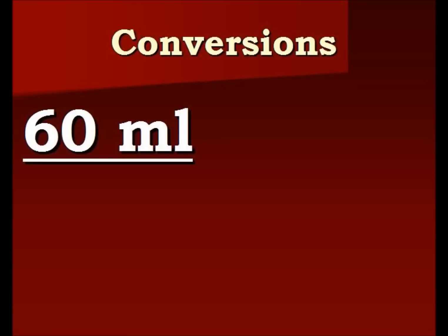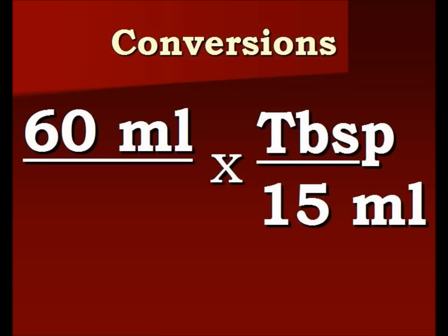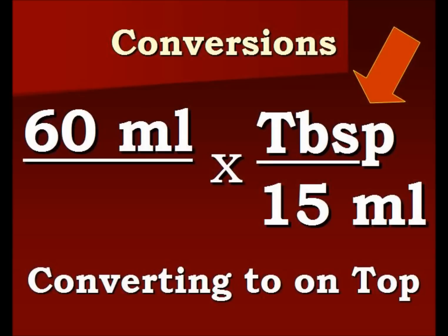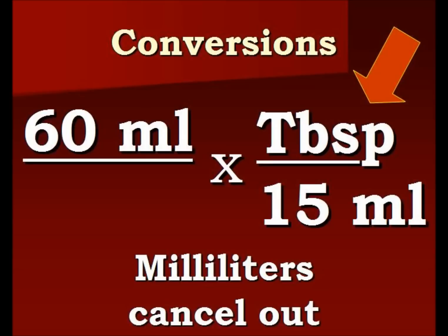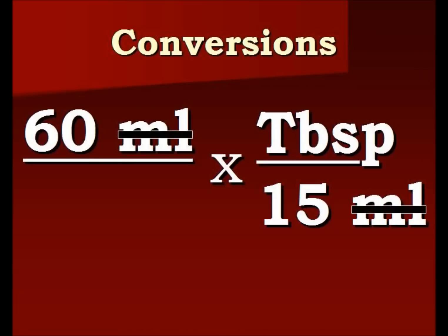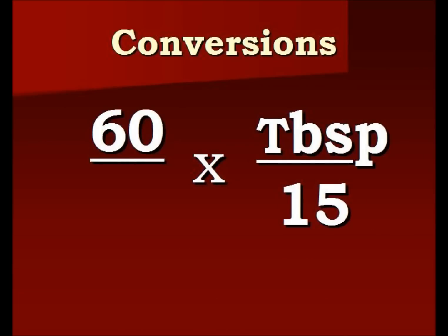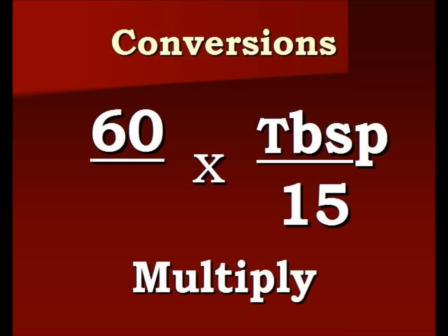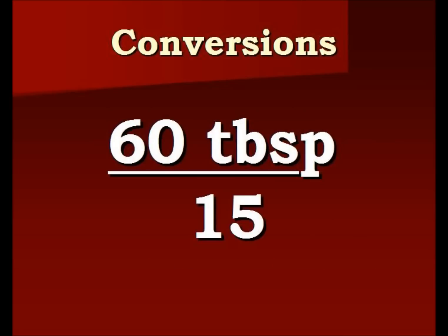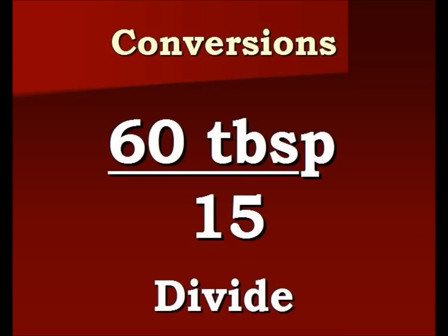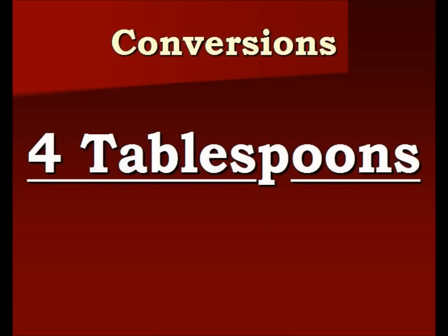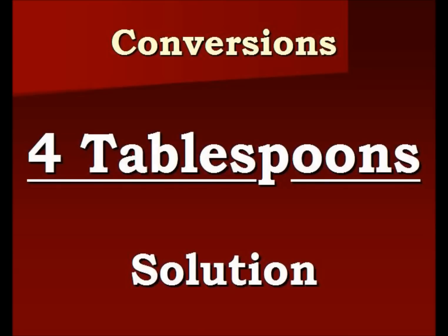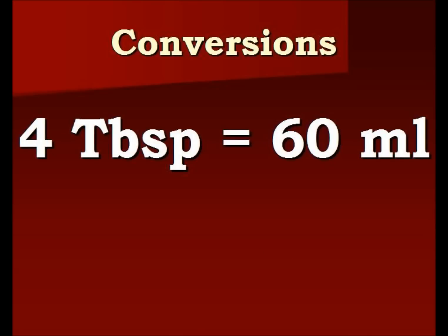So we have the 60 milliliters and we're going to multiply our conversion factor. Notice again, what we're converting to is on top. We're canceling out the milliliters this time. Now we have 60 and we're going to multiply across into the tablespoons, then divide by 15. So we end up with four tablespoons — that's our solution. Four tablespoons equals 60 milliliters.